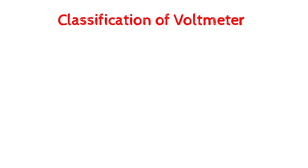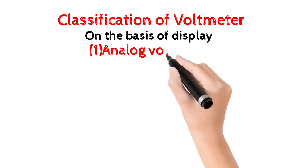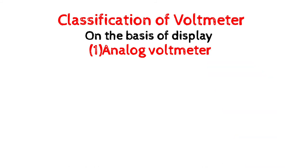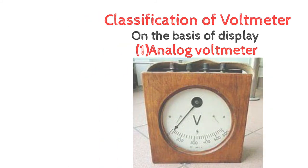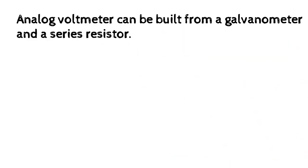Classification of voltmeter. On the basis of display: Analog voltmeter. Analog voltmeter can be built from a galvanometer and a series resistor.